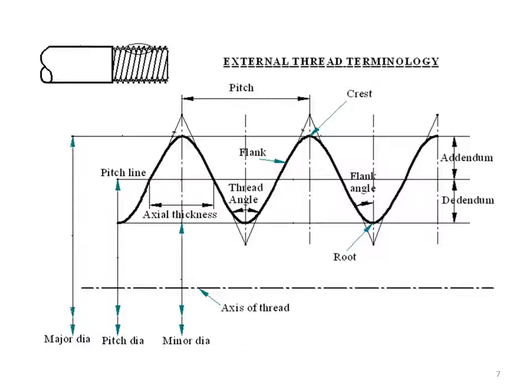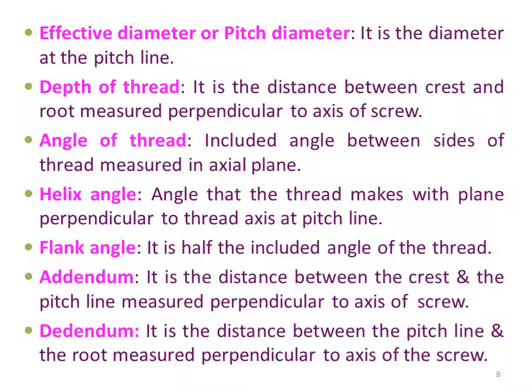Let us see the figure again carefully and look at the next external thread terminologies. Effective diameter or pitch diameter — it is the diameter at the pitch line of a screw thread. Generally, the pitch line itself is an imaginary line, so the effective diameter is itself an imaginary diameter.